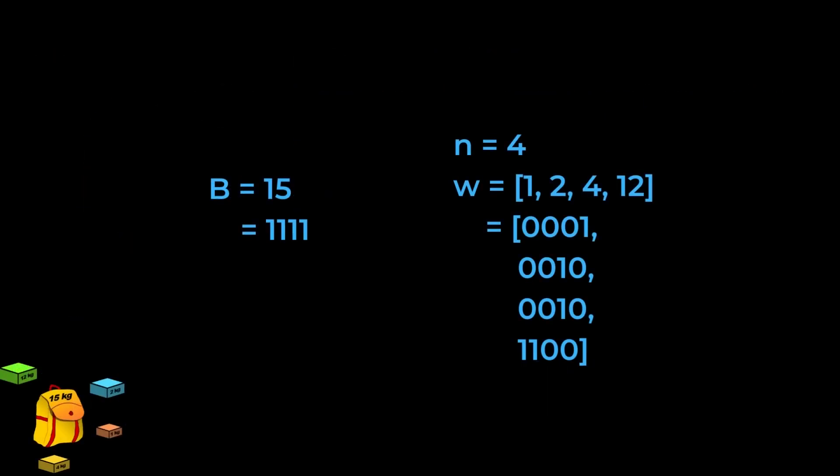We use binary to represent integers in memory, so the capacity B will be a single 4-bit integer. The items w are an array of four 4-bit integers. B is therefore 4 bits long, while w is 16 bits long. Now let's double both and see what happens.